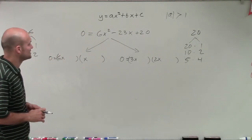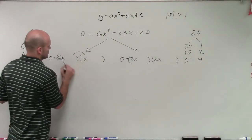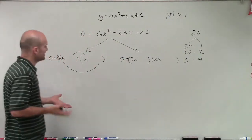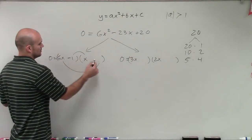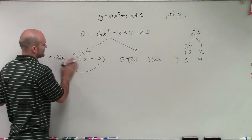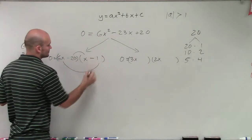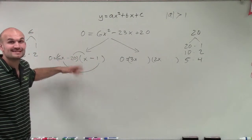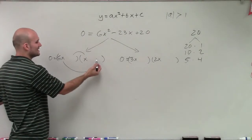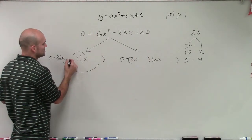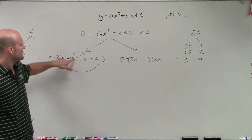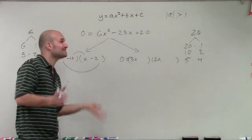Now we just need to do a little guessing and checking. We need our middle and outer terms to add up to negative 23. I'm not going to put a 20 here, because 6x times negative 20 is negative 120x — that's not going to give me anywhere near negative 23. Let's try 6x times negative 1, which is negative 6, and x times negative 20, which is negative 26 — close, but not quite. Then we can try 10 and 2. I'm not going to put the 10 here because 10 times 6 is 60, way too large. So let's do negative 10 and negative 2: 6 times negative 2 is negative 12x, and negative 10 times x is negative 10x, which gives negative 22 — so close, just not there.